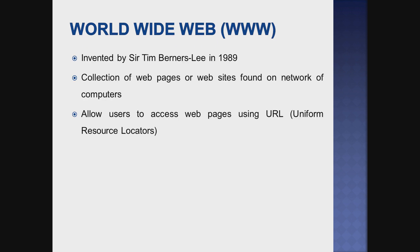Next one is World Wide Web, shortly known as WWW, also said as W3. It was invented by Sir Tim Berners-Lee in 1989. It is a collection of webpages or websites found on a network of computers, and it allows users to access webpages using a URL.